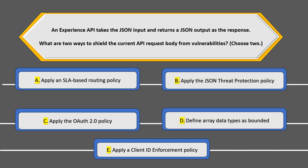The question we are going to discuss says that an experienced API takes the JSON input and returns a JSON output as the response. What are the two ways to shield the current API request body from vulnerabilities? We have to choose two options out of five. Option A is apply SLA-based routing, option B is apply the JSON threat protection policy, option C is apply OAuth 2.0 policy, option D is define array data types as bounded, and option E is apply a client ID enforcement policy.